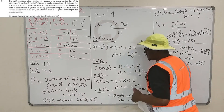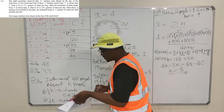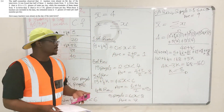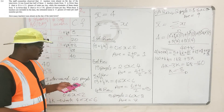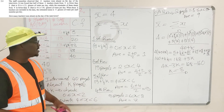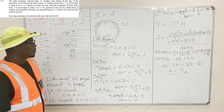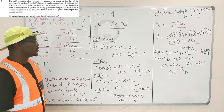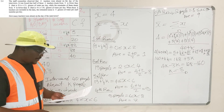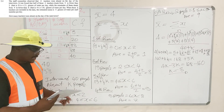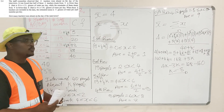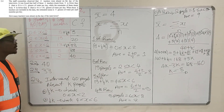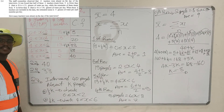So K equals 8, which means 8 teachers were absent on the day in which the interviews were conducted. I think this is how to do this question. I hope it makes sense and is clear to you. Thank you for watching. Cheers.